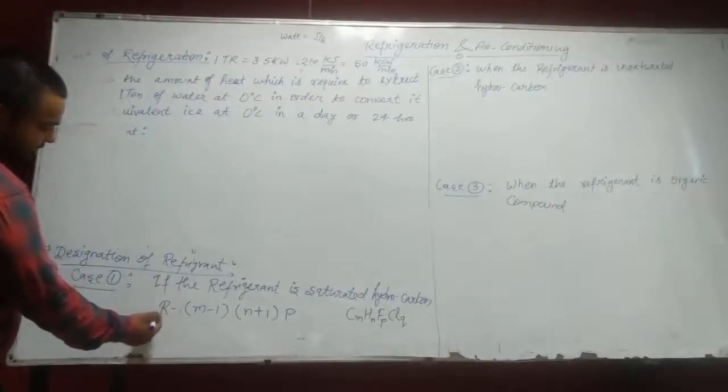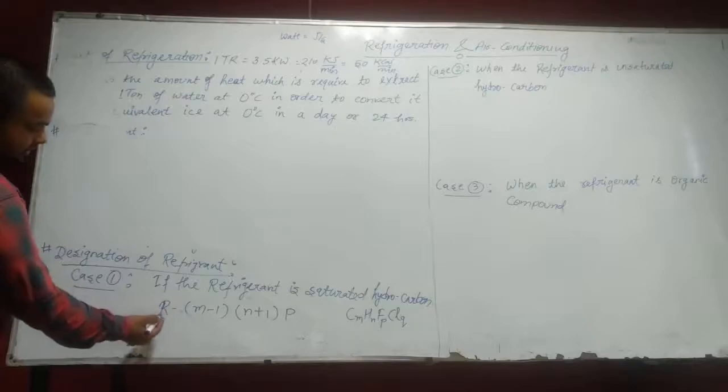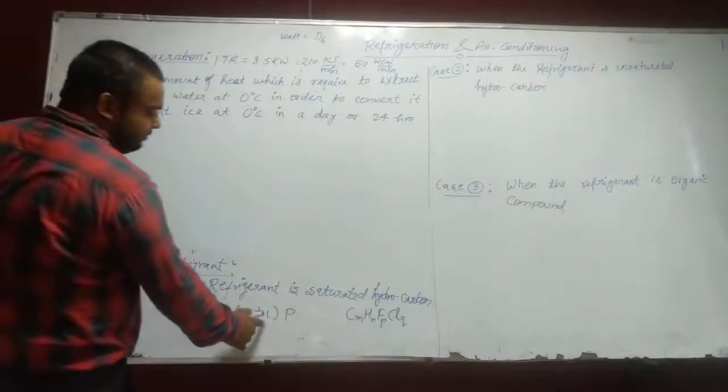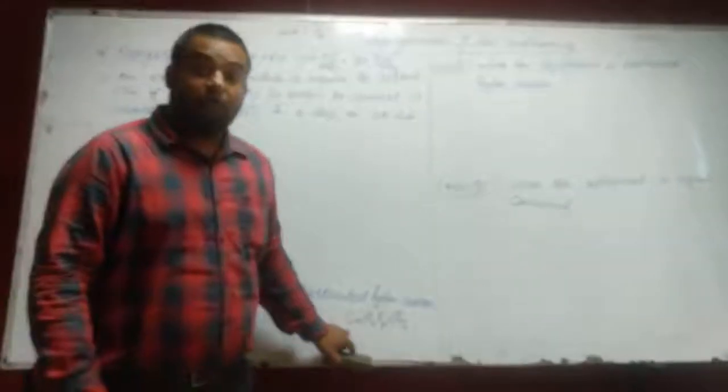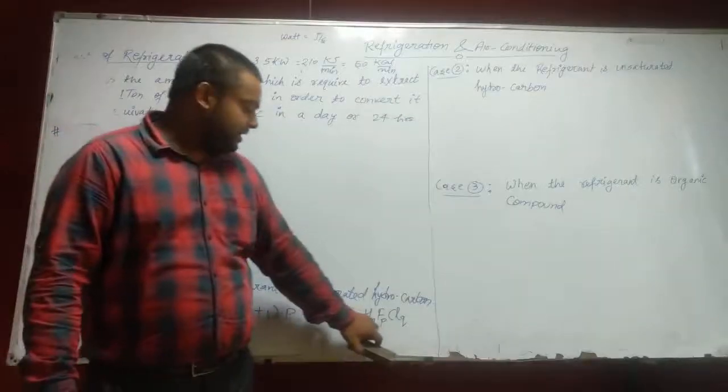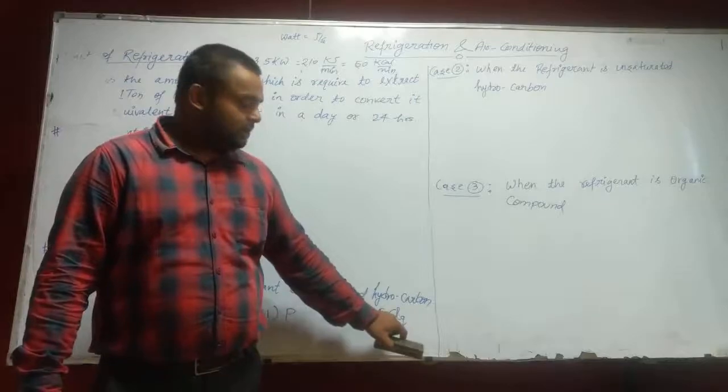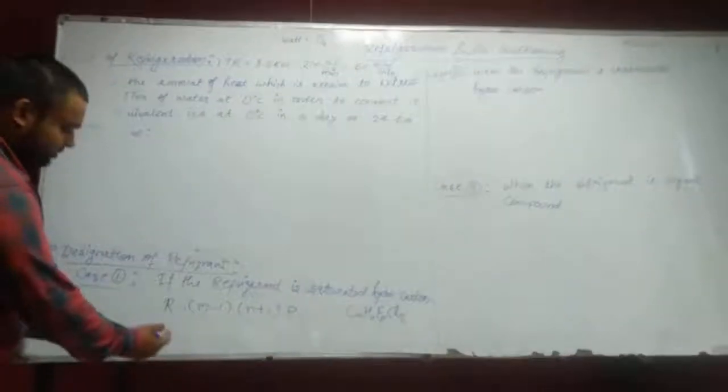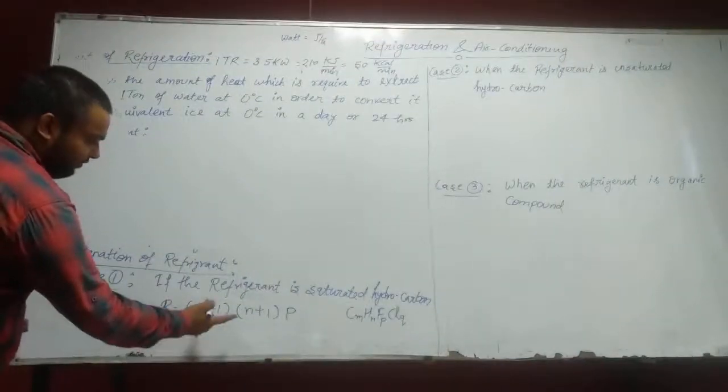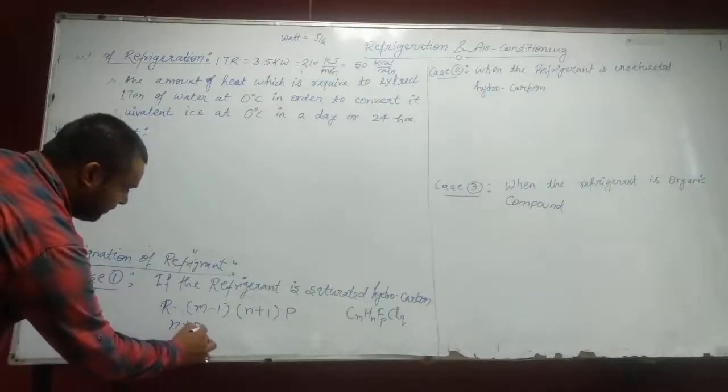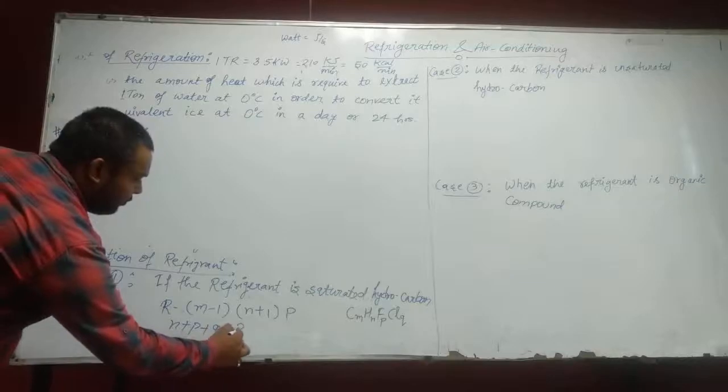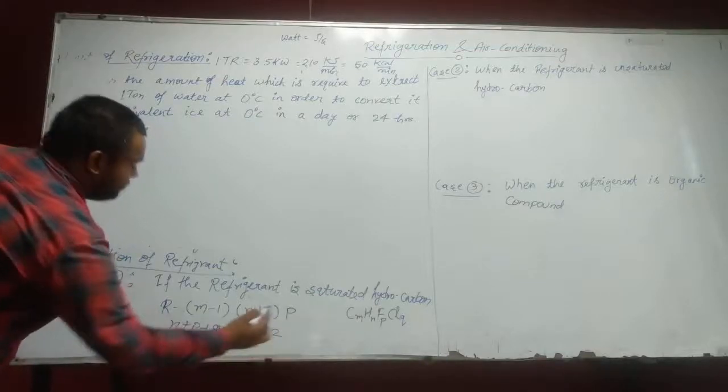Designation is given by R. R stands for refrigerant. Refrigerant is R(M-1)(N+1)P. And the formula of refrigerant is C_M H_N F_P Cl_Q. And for the calculation purpose of M and P, N+P+Q = 2M+2.